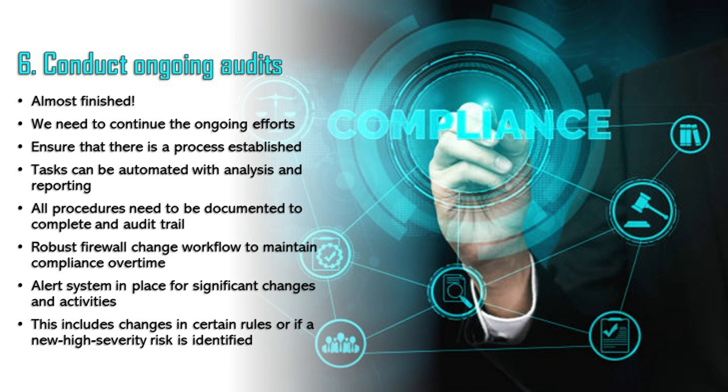Finally, step six: conduct ongoing audits. Now that the initial audit is done, we need to continue auditing to ensure it is ongoing. Ensure that a process is established and continuous for future firewall audits. In order to avoid error in manual tasks, these can be automated with analysis and reporting. All procedures need to be documented in order to create a complete audit trail for all firewall management activities. Ensure that there is a robust firewall change workflow in place to maintain compliance over time. And finally, ensure there is an alerting system in place for significant events, including changes to certain rules or if a new high-severity risk is identified in the policy.